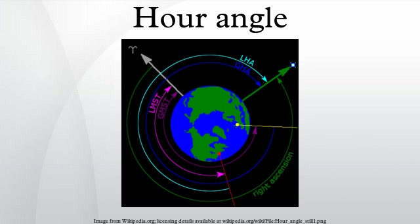The hour angle is paired with the declination to fully specify the direction of a point on the celestial sphere in the equatorial coordinate system.